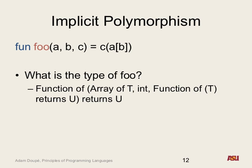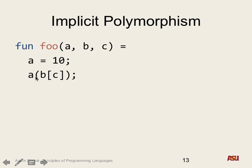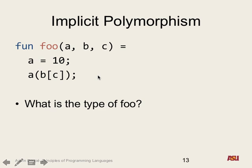Let's look at another function. A is 10, and we're calling A passing in B[C]. What's the type of foo here? Going in reverse: C is an int, B is an array of something, and A — from this line it must be a function, but from the 'A is 10' line it must be an int. Can something be both a function and an int? No — that's a type error.